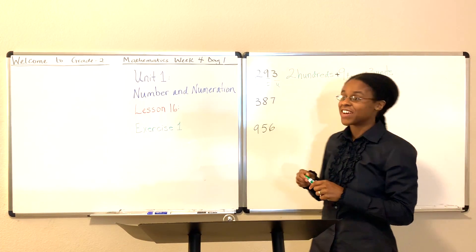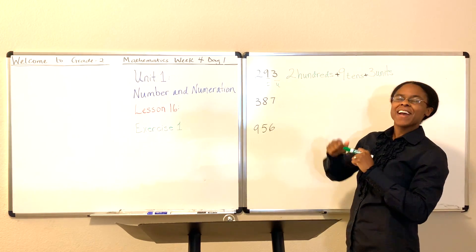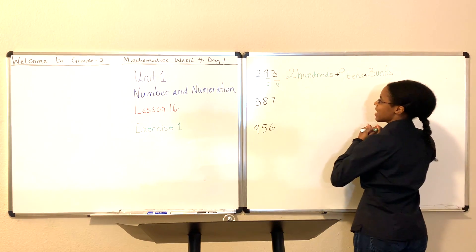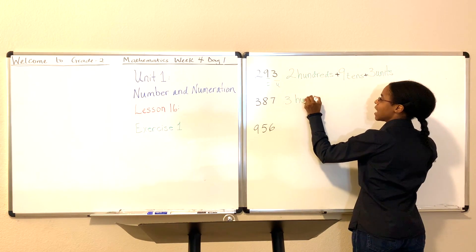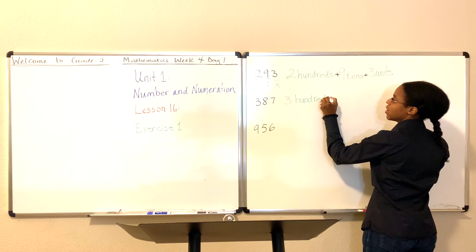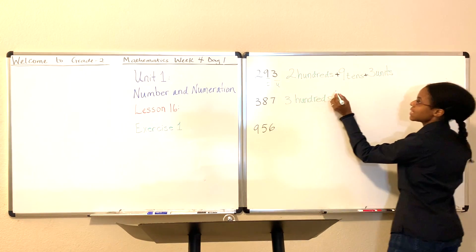We have 387. Let's write this out a little bit. How many hundreds do we have? We have three hundreds. Good job. Three hundreds. And how many tens do we have? Well, we have the tens follow the hundreds place. So we have eight sets of tens.